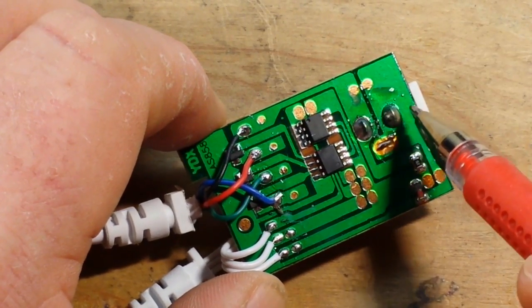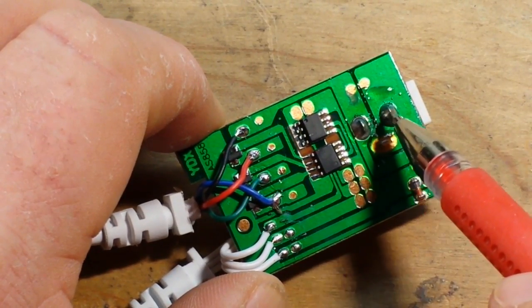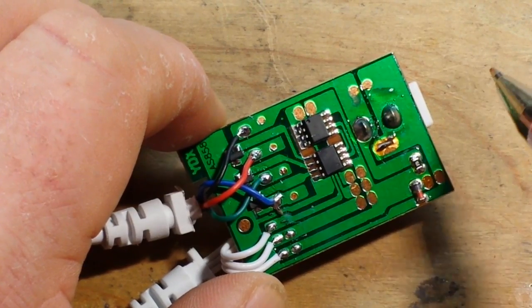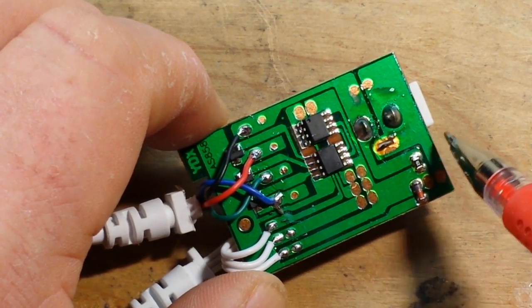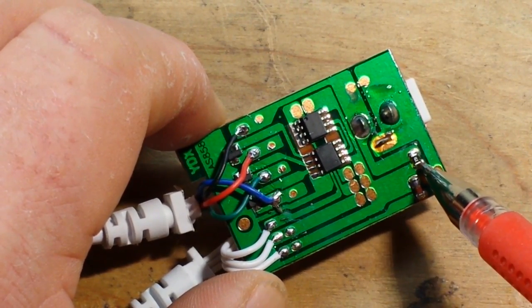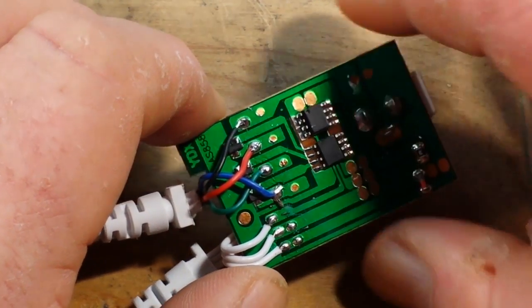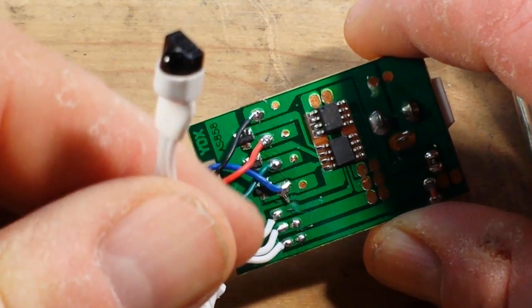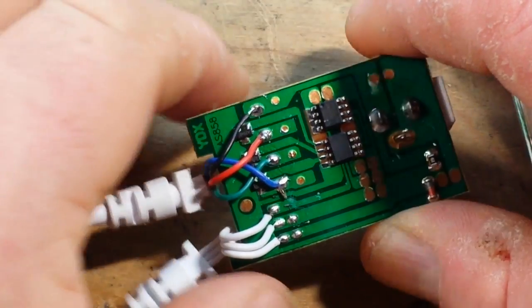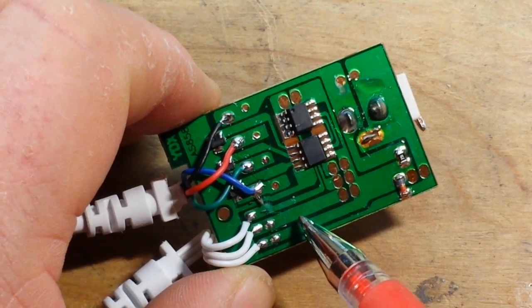If we look really closely at this, we can see our power coming in here. These are our two main power coming in. We've got a resistor here and we've got a diode here.